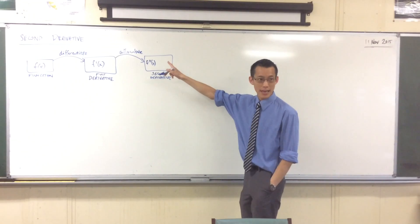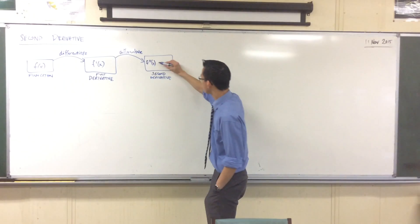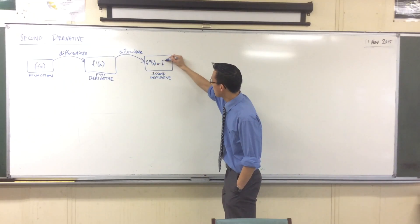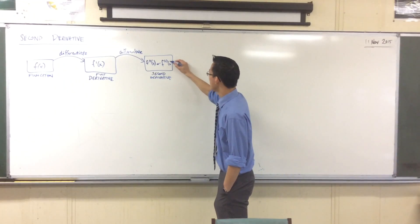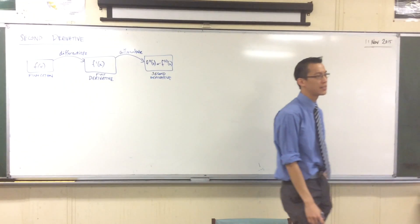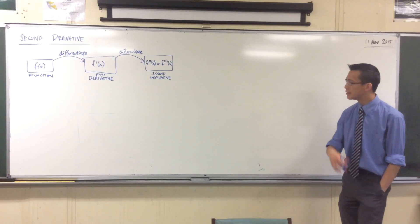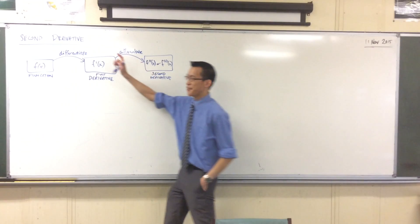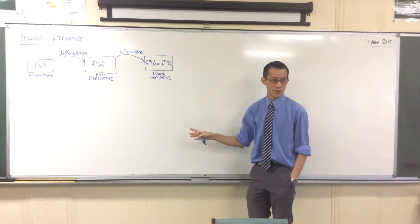So in this context, rather than simply adding dashes, sometimes you will see, instead of that way of writing it, the f with a number in brackets — like two for second. That indicates I've differentiated twice. If you've got three in brackets, you've differentiated three times. Not complicated. So: function, first derivative, second derivative.